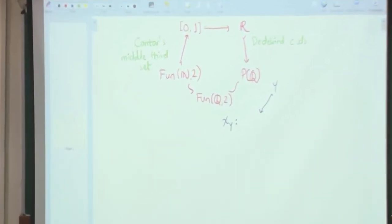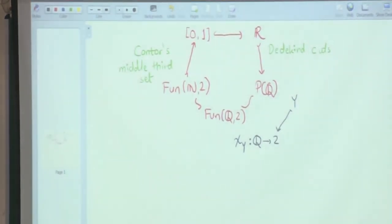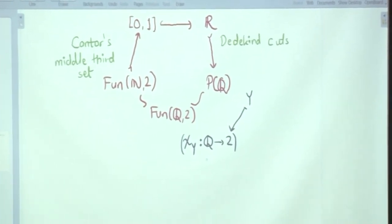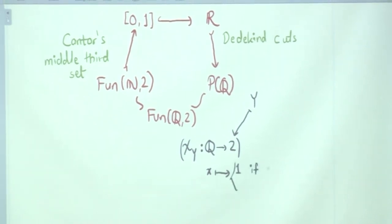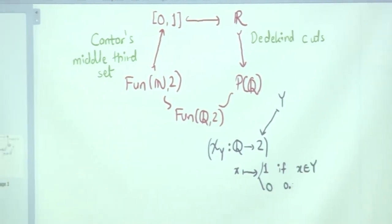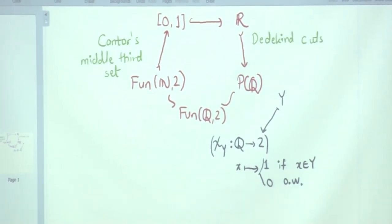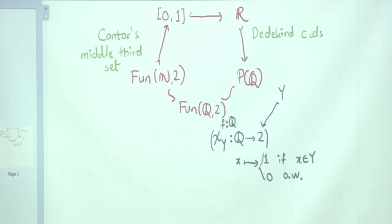A student asks for explanation of the map from Q to 2. This map works as follows: given any subset Y, it goes to the characteristic function of Y, which is a function from rational numbers to 2. That function sends a rational number x to 1 if x belongs to Y, and 0 otherwise. In the reverse direction, given a function f from Q to 2, we map it to f-inverse of 1. Please verify that this is a bijection.